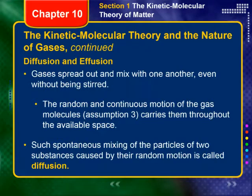Now let's finish up with diffusion and effusion. You may have heard of diffusion in biology class. Gases will spread out and mix with one another even without being stirred, because of the random and continuous motion of gas molecules — assumption three: constant, rapid, random motion — which carries them throughout any available space. All those particles moving around randomly will mix together on their own. This spontaneous mixing of two different substances caused by their random, rapid, constant motion is called diffusion.